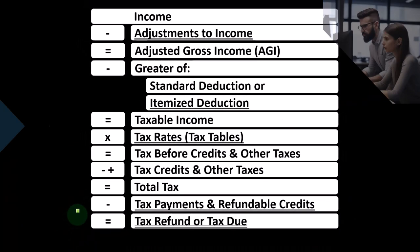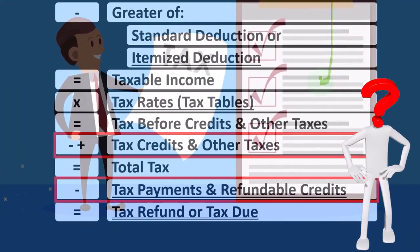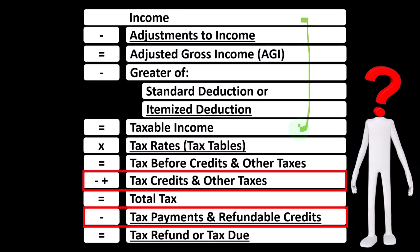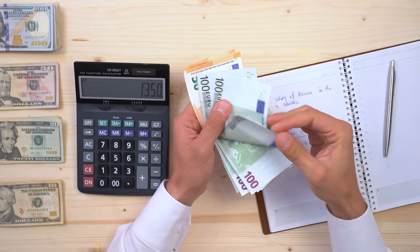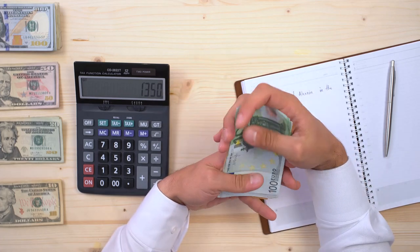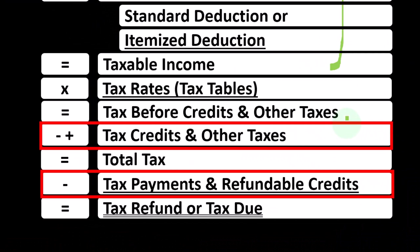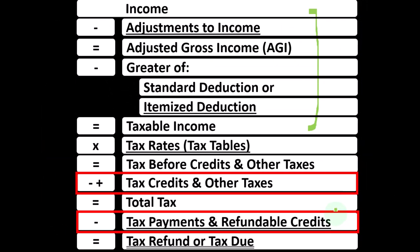Looking at the income tax formula, we're down here in the credit area of the formula. The first half of the income tax formula is, in essence, an income statement — a strange one — with the bottom line being taxable income, similar to net income on a normal income statement. We then calculate the tax on the taxable income, not using a flat tax, but using a progressive tax system to get to the tax before credits and other taxes, such as self-employment tax. We then get to the amount paid in the form of withholdings or estimated tax payments to arrive at the tax refund or tax due.